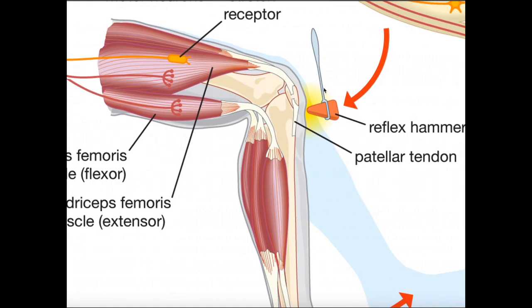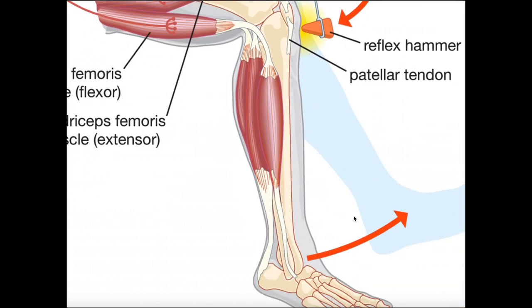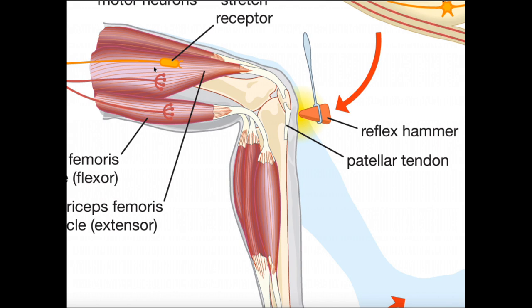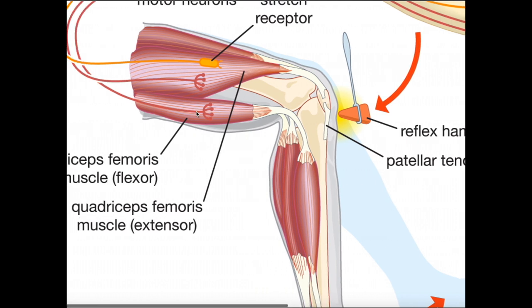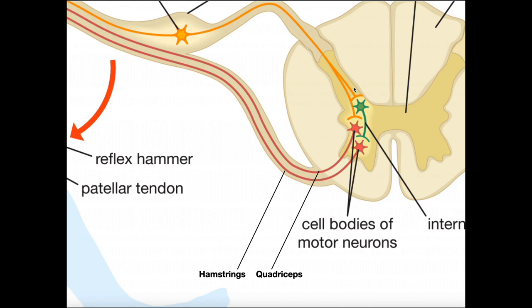Looking at the patellar reflex: when the patellar ligament is struck by the reflex hammer, we know we get knee extension — the lower leg extends outward. The quadriceps would have to contract to produce that knee extension. For the hamstrings to relax — if both contracted, you'd stay more or less isometric with no net knee extension, since hamstring contraction would counteract the quadriceps. So the quads have to contract and the hamstrings have to relax, and we're going to find that this reflex arc makes that happen exactly.